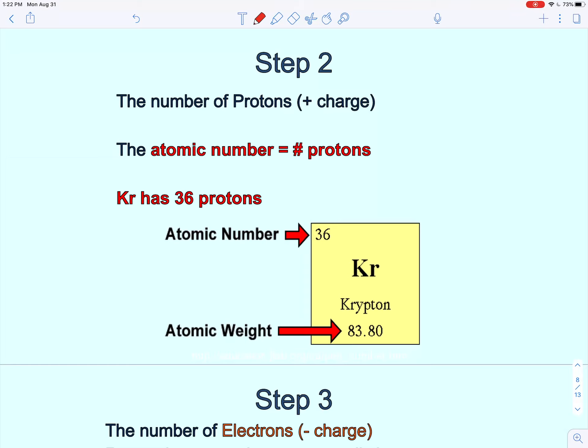And so the number of protons is going to be equal to the atomic number. It's always a whole number. And so here we can see that krypton has 36 protons.